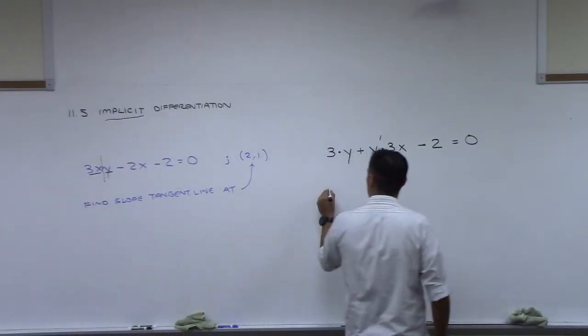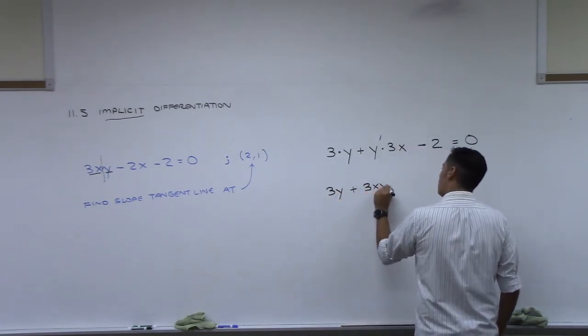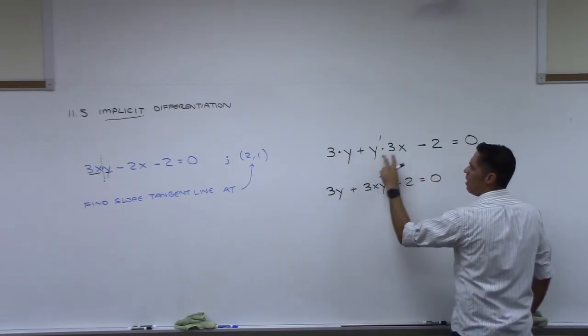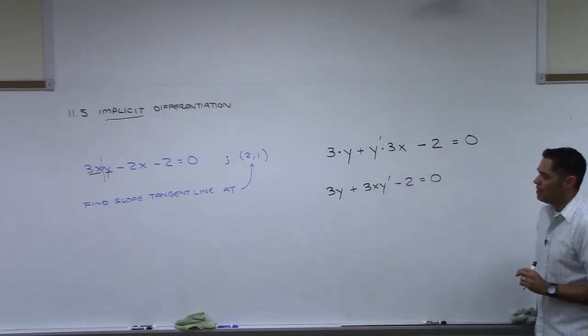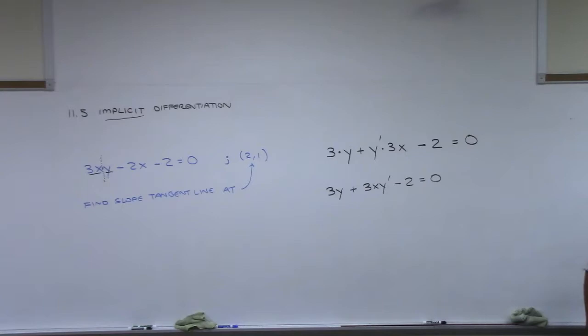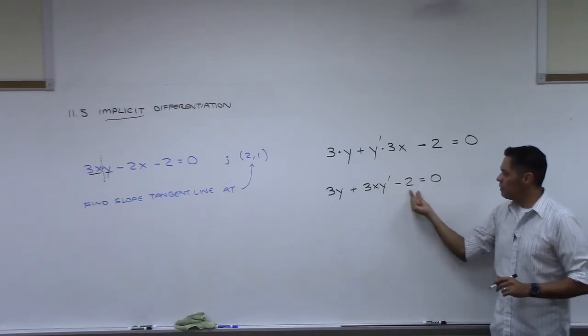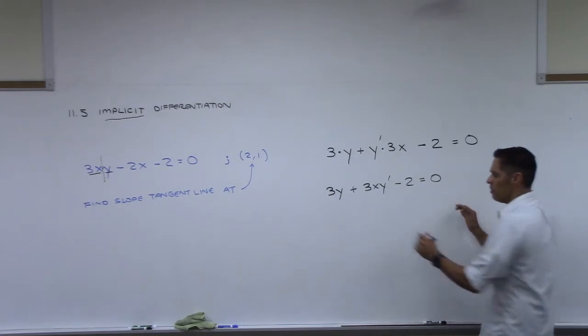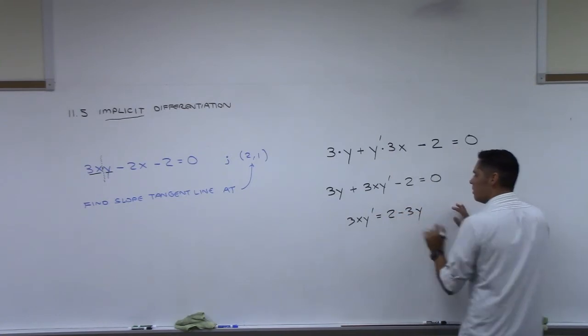So here's where we are. We've got 3y plus 3xy prime minus 2 equals 0. So I just put those together, 3y. I put the 3x in front of the y prime minus 2 equals 0. And we're trying to find the slope of the tangent line at a specific point. So I need to take this and solve it for y prime.